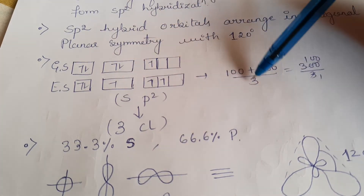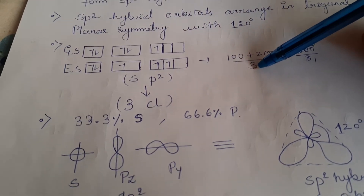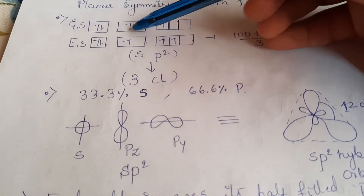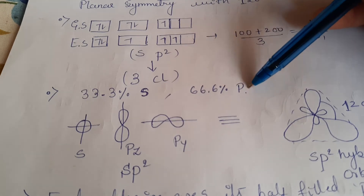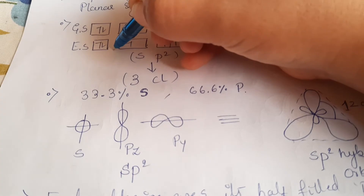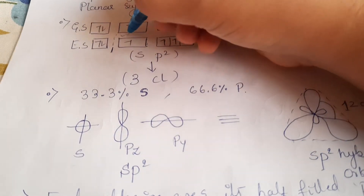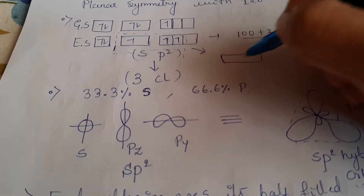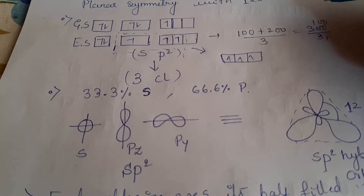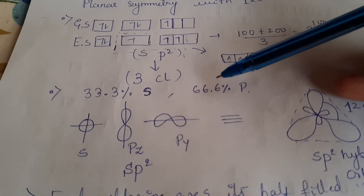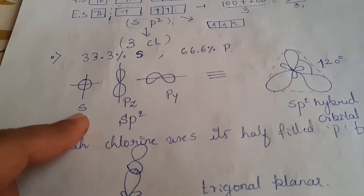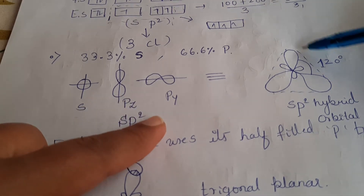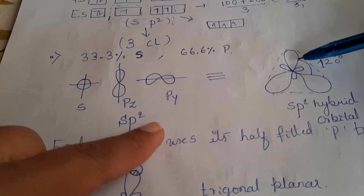With 1S and 2P orbitals involved, there is 33.3% S character and 66.6% P character after hybridization. When the S orbital combines with the two P orbitals, they form SP² hybrid orbitals with 3 unpaired electrons. The S orbital of boron and the PZ and PY orbitals of boron combine to form SP² hybrid orbitals with a bond angle of 120 degrees.